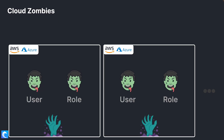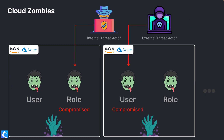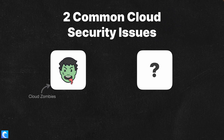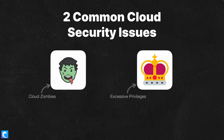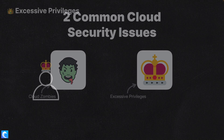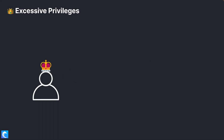The problem with keeping them around is that they increase your attack surface to both internal and external threats. That brings me to the next issue: excessive privileges. Most resources and identities in your cloud environments probably have more privileges than they actually need, and it usually starts off something like this.